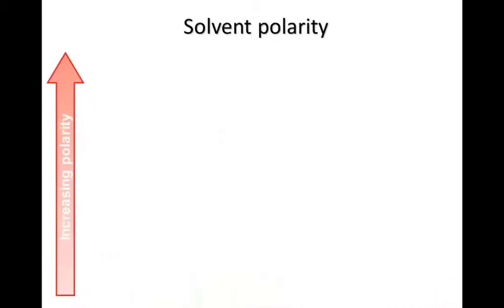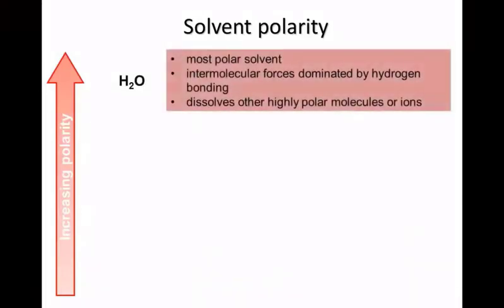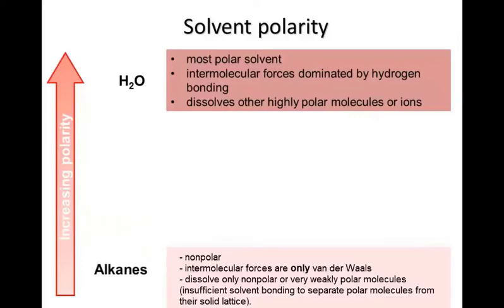Finally, there's the effectiveness of alcohols as solvents for other substances. The first solvent you met many years ago was water — it's the most polar solvent we know of. Its intermolecular forces are strongly dominated by hydrogen bonding, and it's used to dissolve other highly polar molecules or ionic substances. At the other end of the scale, we have alkanes, which are completely nonpolar because they can only interact via van der Waals forces. They cannot attract the molecules of a polar substance sufficiently to separate them from one another, and so they cannot dissolve them — they can only dissolve other nonpolar substances.